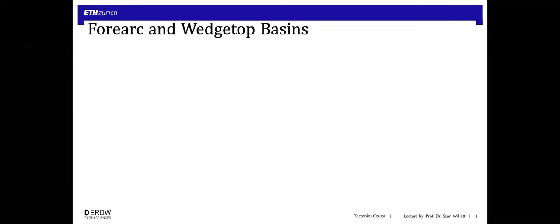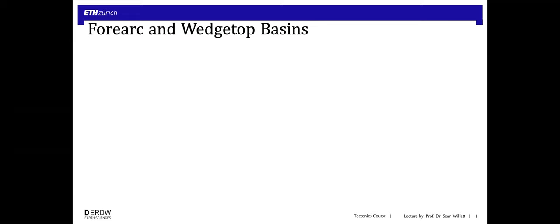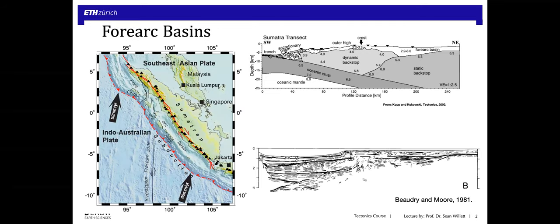In today's lecture, I'd like to talk about another aspect of orogenic wedge theory: forearc basins, which I'm going to argue are a special case of what we call wedge top basins. These are sedimentary basins associated with orogenic belts and thus are linked to the theory of orogenic wedges. Forearc basins are found between the trench and the arc in pretty much all marine settings and also many continental settings.